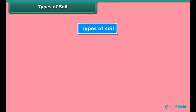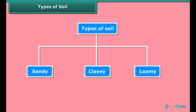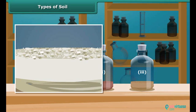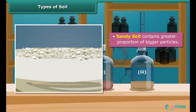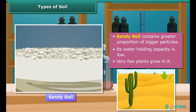Types of Soil. There are basically three types of soil: sandy, clay and loamy. Let's take three samples of soil and examine them one by one. We can see the first sample contains a greater portion of bigger particles, so this is a sandy soil. Its water holding capacity is low, therefore very few plants grow in it.